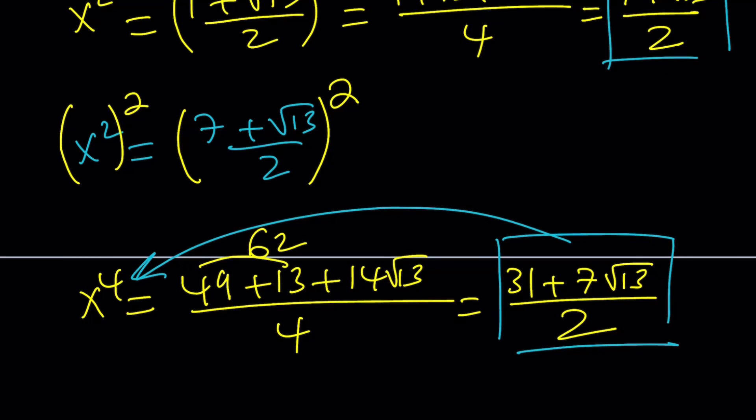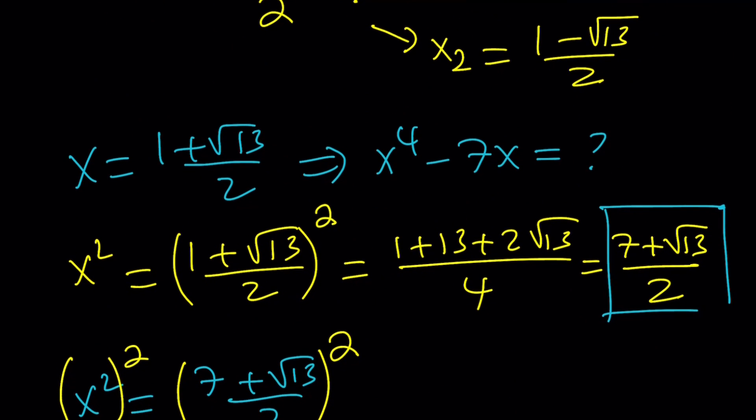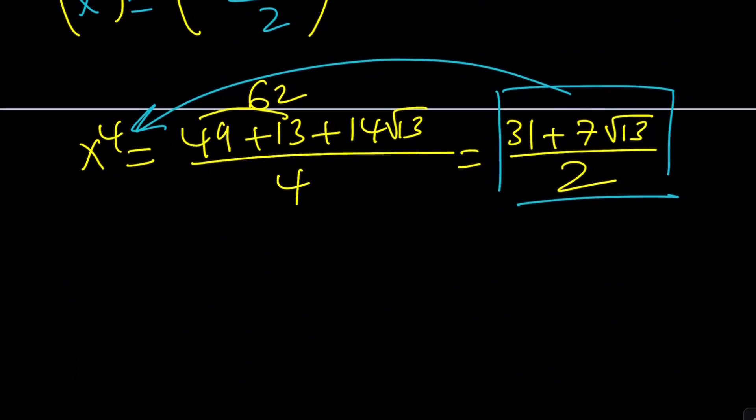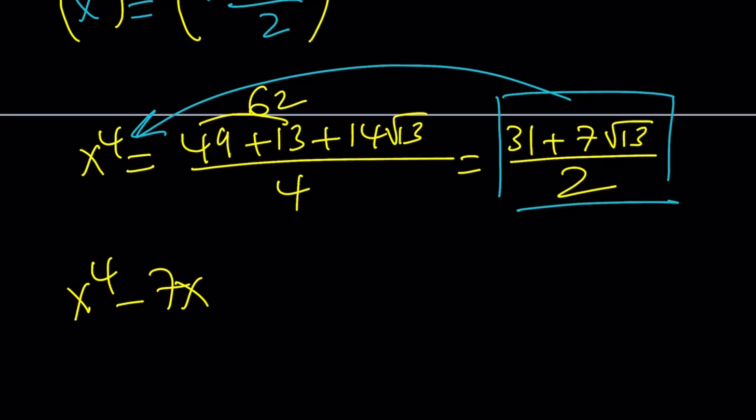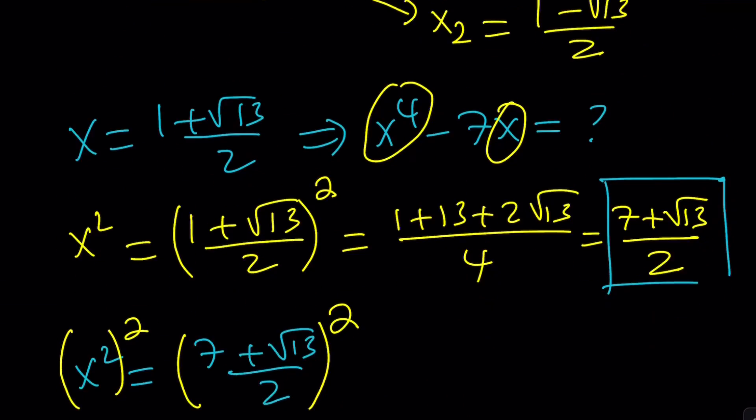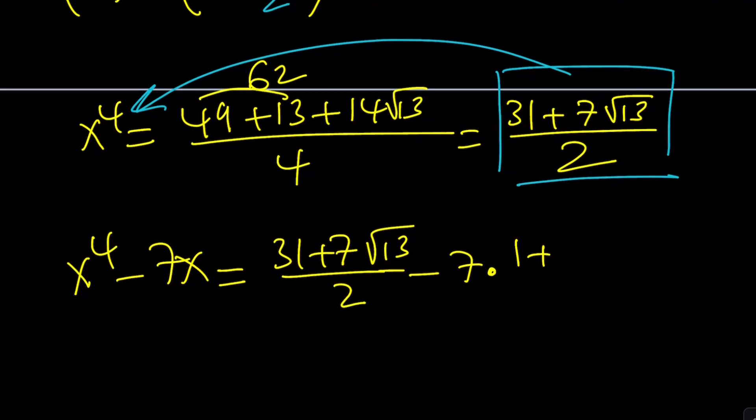Now, I do need two things, x to the 4th and x. Let's go ahead and plug those in. I do need to evaluate x to the 4th minus 7x. And now, x to the 4th is 31 plus 7 root 13 over 2 minus 7 times x, which is 1 plus root 13 over 2. So, I got the x value and then I squared it and then I squared it again to get the 4th power. Now, I am subbing.